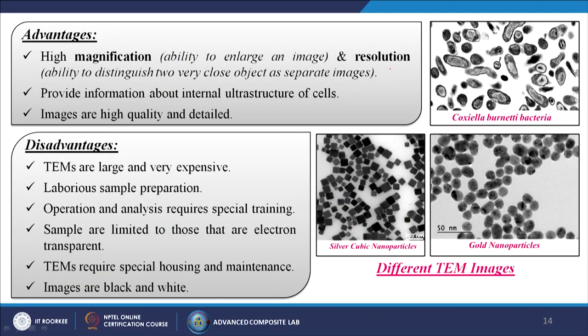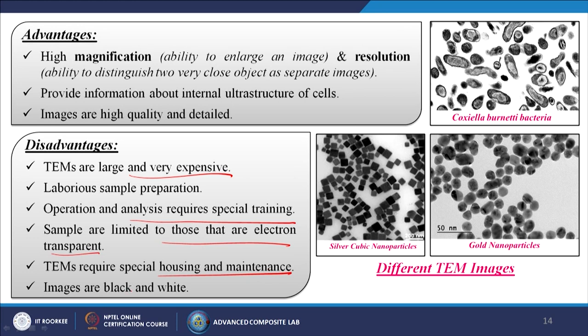Advantages of TEM: high magnification, ability to enlarge an image and high resolution to distinguish two very close objects as separate images. Provides information about internal ultrastructure of cells; images are high quality and detailed. Images can be obtained at 50 to 200 nanometer scale, such as silver cubic nanoparticles, gold nanoparticles, or bacteria. Disadvantages: TEMs are large and very expensive, sample preparation is laborious, operation and analysis require special training, samples are limited to those that are electron-transparent, TEMs require special housing and maintenance, and images are black and white.